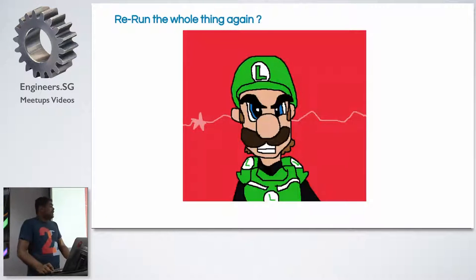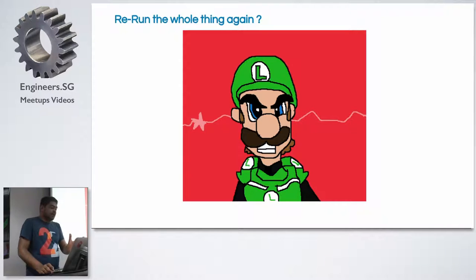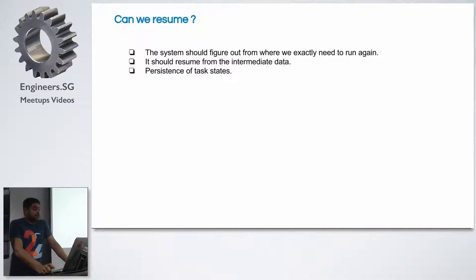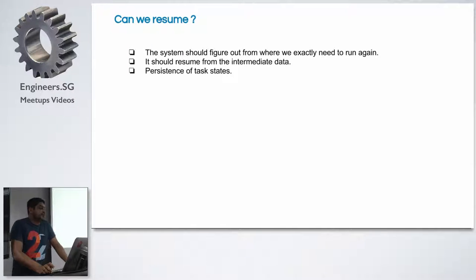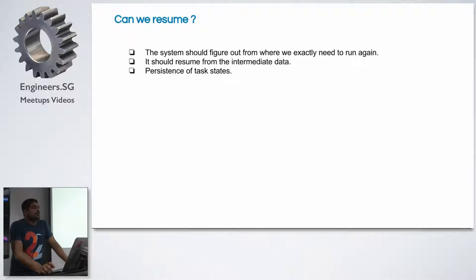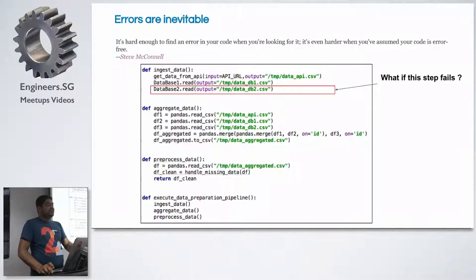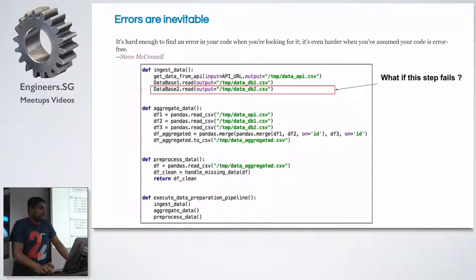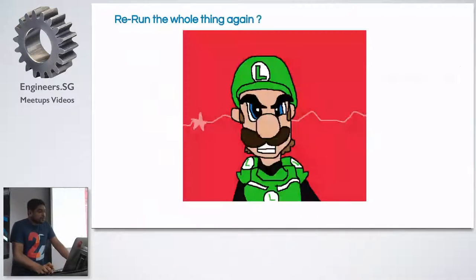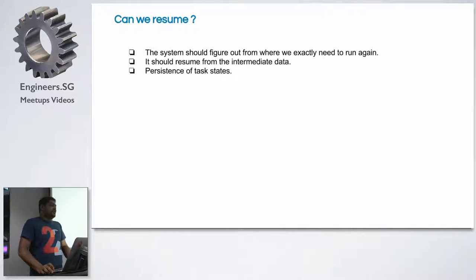The next question is: can we maintain states and go forward? How can we resume? We need the system to figure out exactly where it failed last — why not continue from the previous step? In our case, we're already done with the database one read, so we just need to restart the database two read, because there might have been a DB connection error.